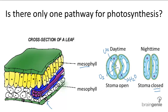Under hot, arid weather conditions, water loss is a really big issue and this setup for photosynthesis becomes inefficient. As long as the stomata are open during the day, water will rapidly evaporate into the hot and dry air, and a normal plant would quickly deplete its water supply.